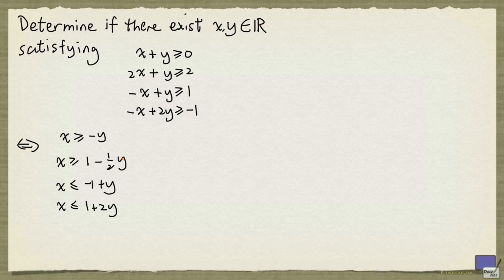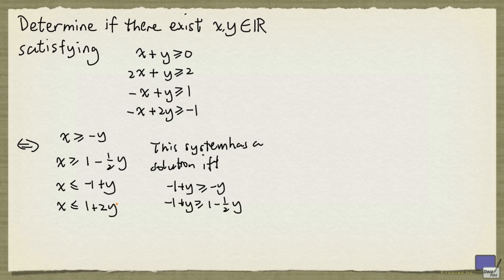As we have seen before, we need each of these upper bounds to be at least each of these lower bounds. So this has a solution if and only if the following system has a solution. So I need the upper bound to be at least this lower bound, and this to be at least this, and this to be at least this, and this to be at least this.